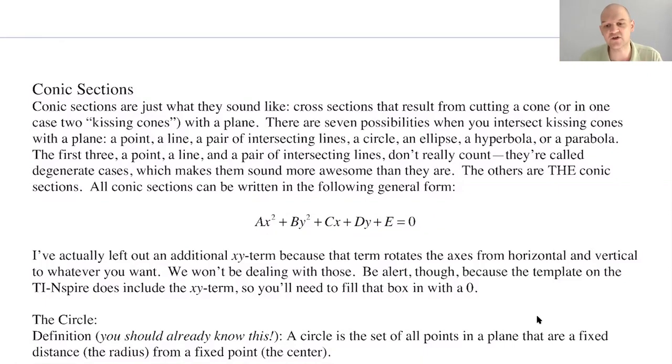So this is the general form because all of them can look like this. So we got Ax squared, By squared, Cx, Dy, and E. There's actually another term that I don't usually put in that I actually never put in. It's an XY term and it would go between here. And it, cause it's another quadratic term. X times Y has degree two because it's X to the first, Y to the first, so overall degree two.